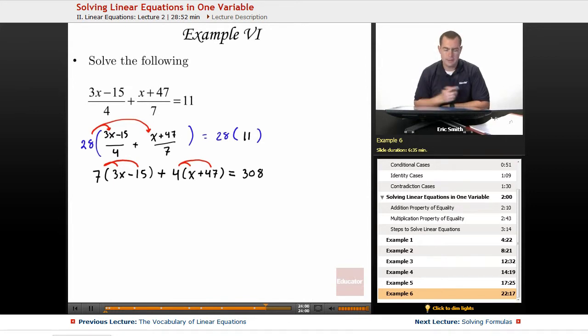Hopefully free up those x's, get them out of parentheses. So 21x minus 7 times 15, that's 105 plus 4x, and now I have 4 times 47, that'd be 188. Again, some big numbers, but just have to push on through.